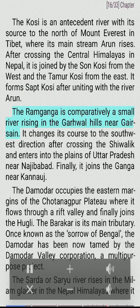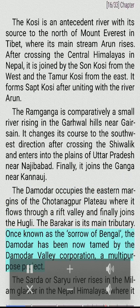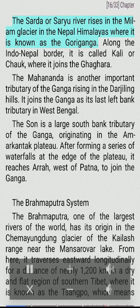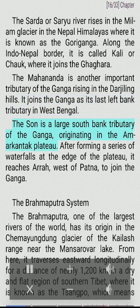The Ramganga is a comparatively small river rising in the Garhwal hills near Gairsain. It changes its course after crossing the Shiwalik and enters the plains of Uttar Pradesh near Najibabad, finally joining the Ganga near Kannauj. The Damodar occupies the eastern margins of the Chota Nagpur plateau, flows through a rift valley, and finally joins the Hooghly. The Barakar is its main tributary. Once known as the 'Sorrow of Bengal,' the Damodar has now been tamed by the Damodar Valley Corporation. The Mahananda is another important tributary of the Ganga, rising in the Darjeeling hills.